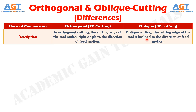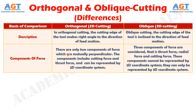If we differentiate them in terms of components of force: in 2D cutting, there are only two components of force which are mutually perpendicular. The components include cutting force and thrust force, and can be represented by a 2D coordinate system. Whereas in 3D cutting, three components of force are considered — thrust force, radial force, and cutting force. These components cannot be represented by a 2D coordinate system; they can only be represented by a 3D coordinate system.